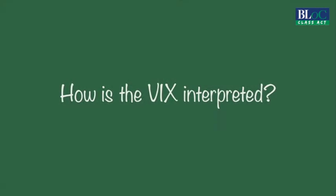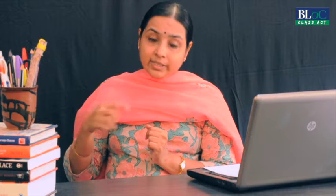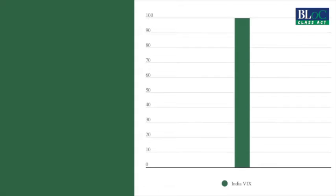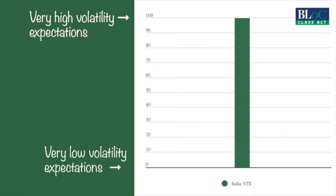The India VIX is given as a percentage number. The monthly volatility expectation is calculated and then multiplied by 12 to annualize it. The India VIX can vary between 0 and 100 — 0 denoting very low volatility expectations and 100 denoting very high volatility expectations.